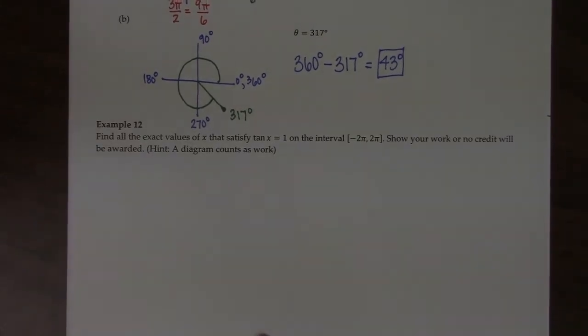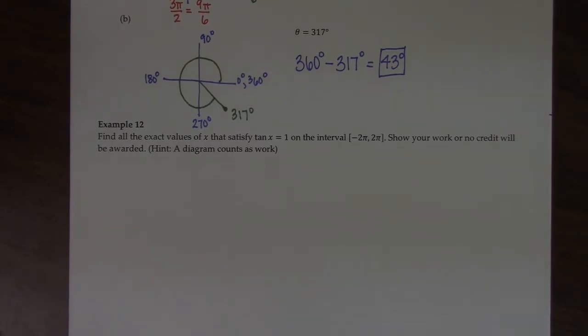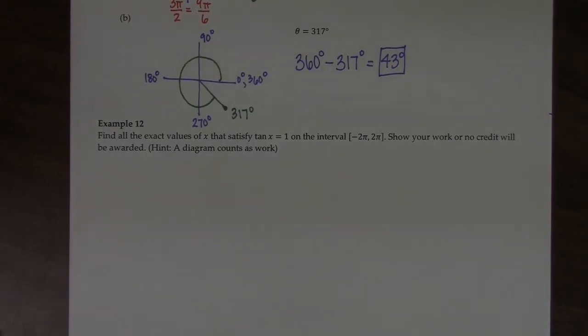Example 12 says, find all the exact values of x that satisfy tangent of x equals 1 on the interval negative 2π to 2π. Show your work or no credit will be awarded. Hint: a diagram counts as work.